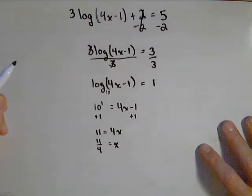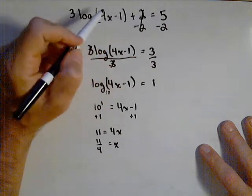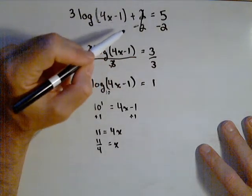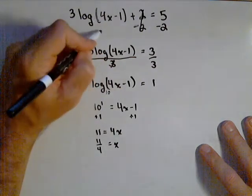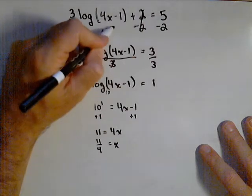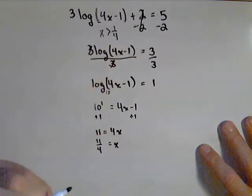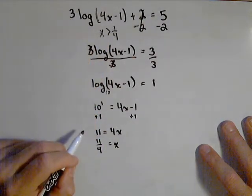Now, because we're dealing with a logarithmic equation, the last thing we always want to check is to make sure it's in our domain. The domain of this is that x has to be greater than 1/4. 11/4 is definitely greater than that, so it checks out.